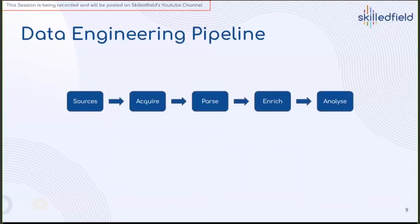Any data engineering pipeline in the world has these main components. You have data sources — you need to acquire data from them. Once you do that, you need to parse and process the data. If it's structured, you match it against the data model. If it's unstructured, you make it structured. If it's semi-structured, you structure it accordingly. You need to parse the data and make it something you can write code on top of.